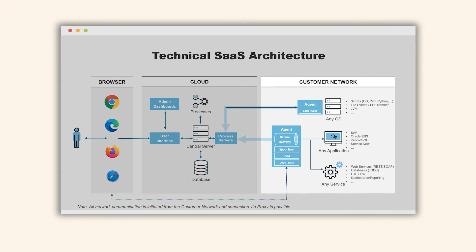The first process server definition type is a pointer to a small lightweight customer-specific agent that executes operating system tasks, scripts, file triggers and event-based automation. It can also perform agent-to-agent transfers without the need for an FTP server. This type of agent resides in the customer network tier. The agent technology is self-updating, meaning that you only need to install the software once and you can then forget about any labour-intensive upgrades and patches forever.